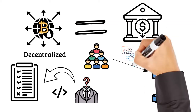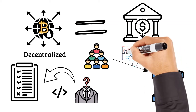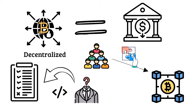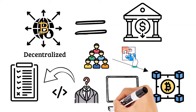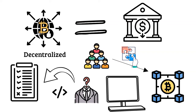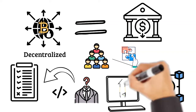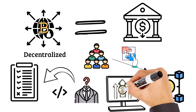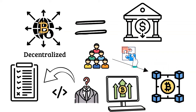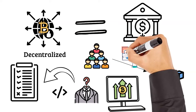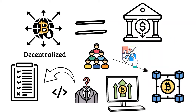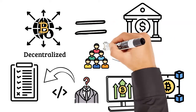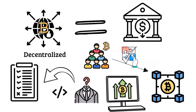All you need to do is guess a random number that solves an equation generated by the system. Of course, this guessing is all done by your computer. The more computing power you have, the more guesses your computer can make per second, thus increasing your chance of winning. If you manage to guess the right number, you earn bitcoin.